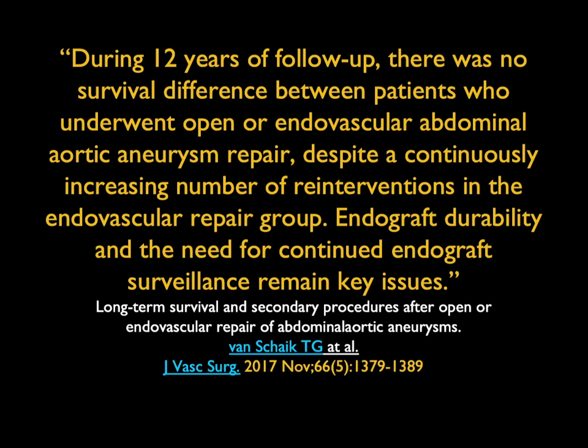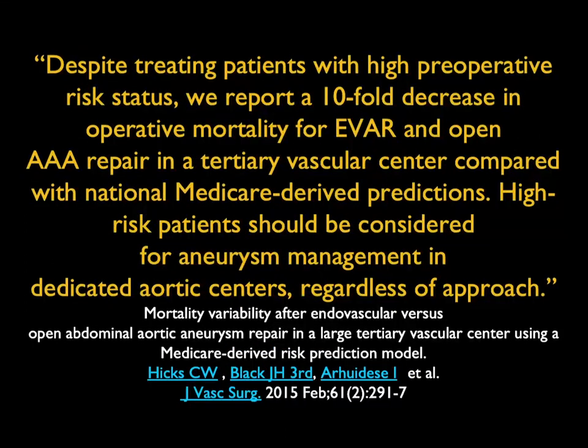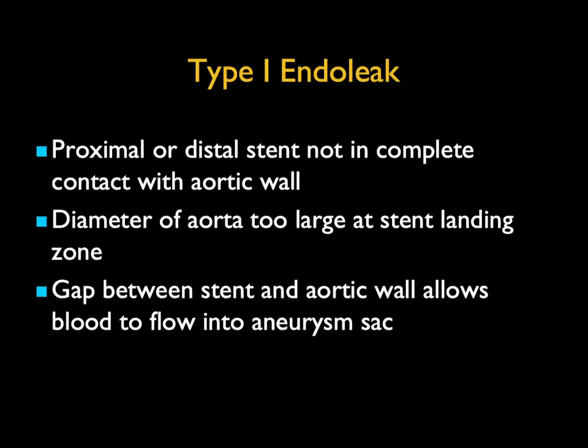Now let's look at some endoleak examples. Type 1 endoleak: the proximal or distal stent is not in complete contact. You're seeing the leak really high or really low. The diameter of the aorta may be too large at the stent landing zone, creating a gap between the stent and the aortic wall that allows blood to flow into the sac. Here's a nice example — you can see the leak coming upward or coming downward.